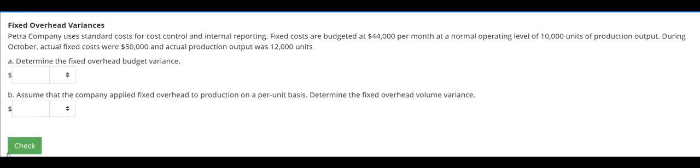Let's take a look at fixed overhead variances for just a moment. This is one of the easiest types of variances that we can look at in a manufacturing environment.